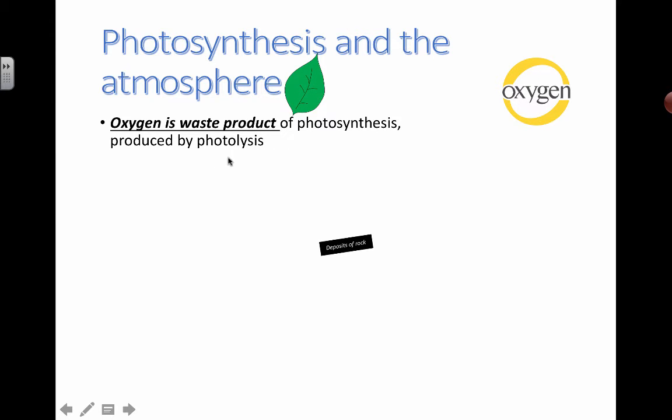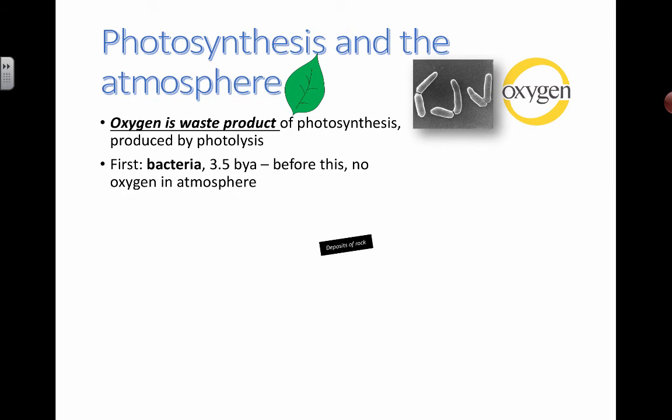So photolysis is the splitting of water and when water gets split it turns into oxygen and hydrogen. The oxygen immediately comes off as a waste product and that's what we're going to be talking about here. The hydrogen splits up into protons and electrons and both of those things are used extensively in photosynthesis and in the detailed processes. So make sure you understand that to the level that you need to.